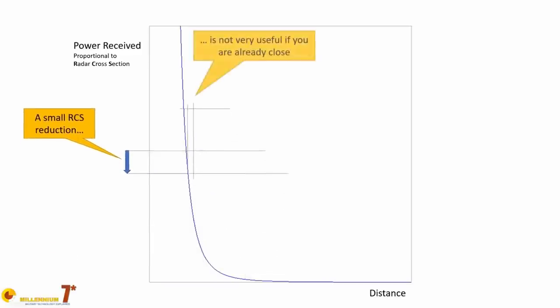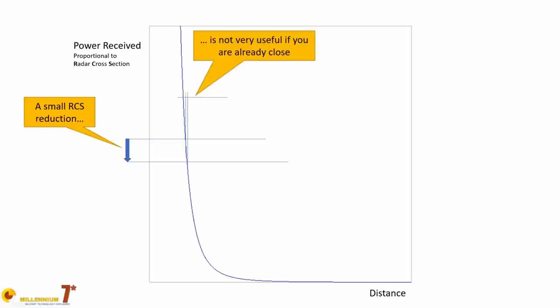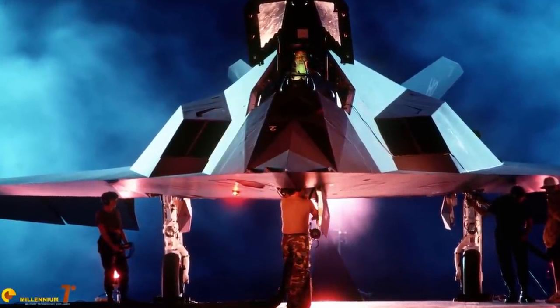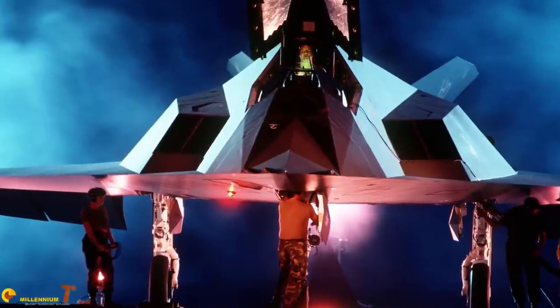The radar cross-section is a property of the object itself. The lower the radar cross-section, the lower is the energy reflected toward the emitter. If the probability of detection decreases with the fourth power of the distance, it means that even a small reduction in radar cross-section will do wonders at long distance. But the flip side is that when you get close to the target, the probability of interception also increases with the fourth power. So if you want to be stealthy close to the emitter, you need a drastic reduction of radar cross-section.